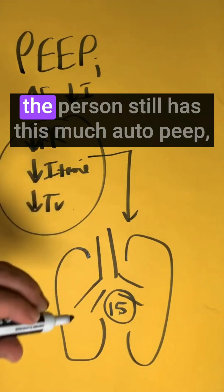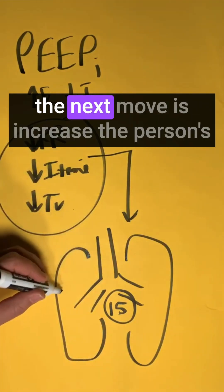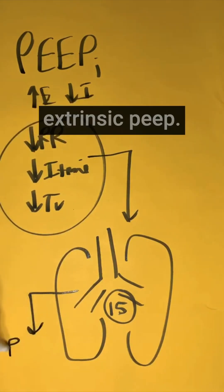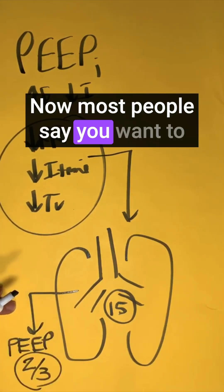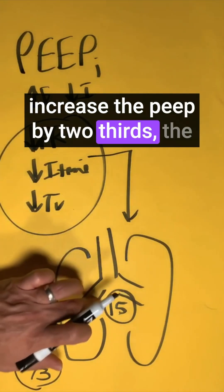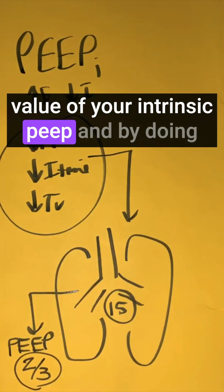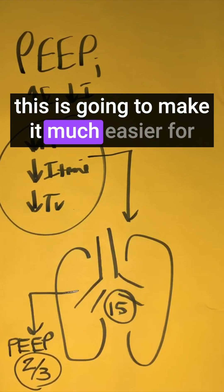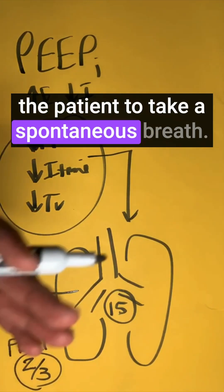So after you do all these maneuvers and the person still has this much auto PEEP, the next move is to increase the person's extrinsic PEEP. Now, most people say you want to increase the PEEP by two-thirds the value of your intrinsic PEEP, and by doing this, it's going to make it much easier for the patient to take a spontaneous breath.